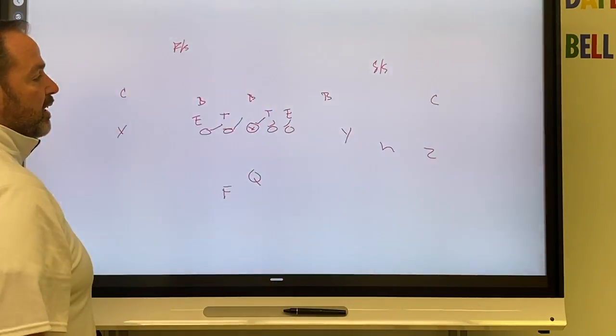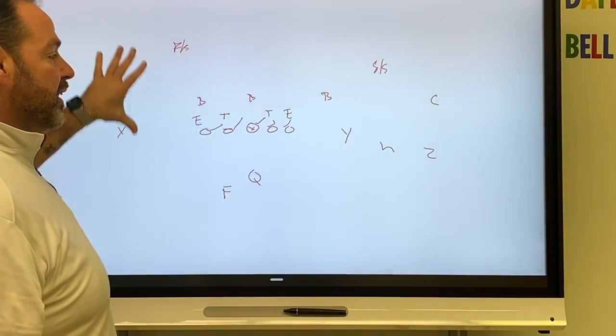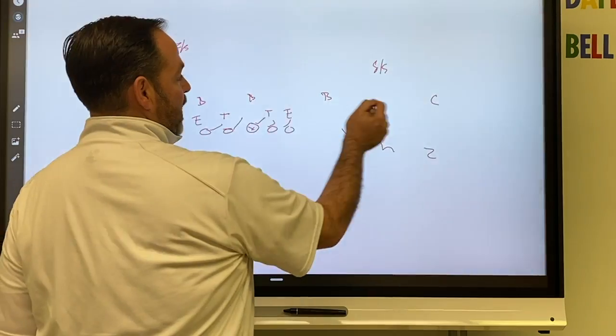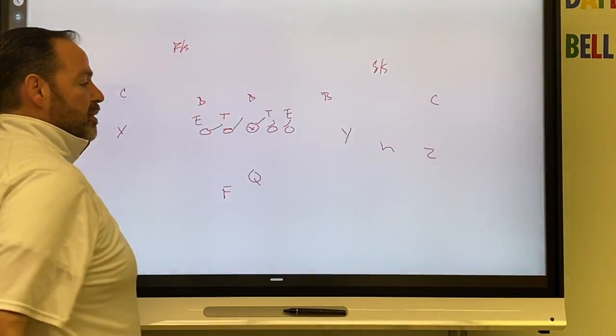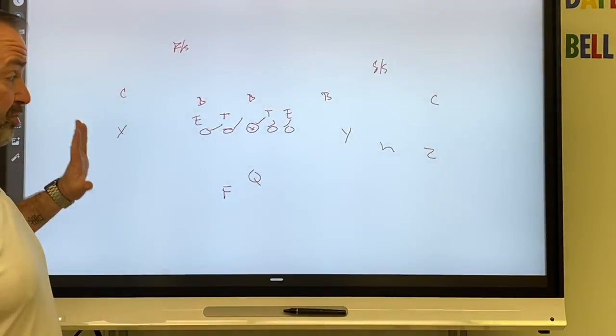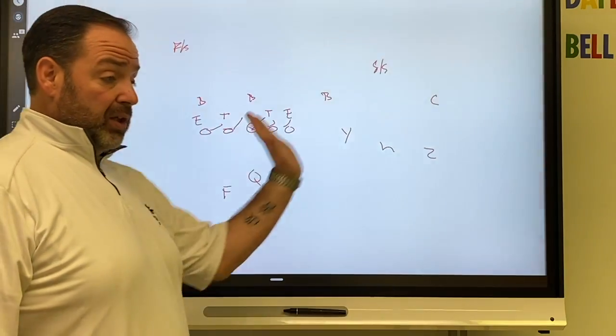So right now, if you're running it early, this is generally what you're going to get. Something like this. You're going to get a split the difference backer, six-man box, roll down safety or whatever. Okay, so here's what Phil was talking about.